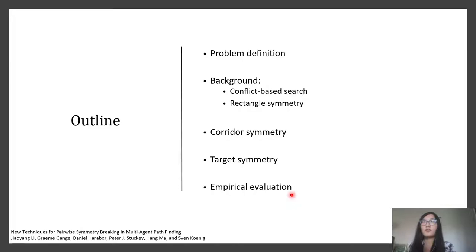In this talk, I will first define what multi-agent path finding is, and then show conflict-based search, the algorithm for solving this problem, and the existing work on symmetry reasoning. I will then show our new work, Corridor Symmetry Reasoning and Target Symmetry Reasoning, and show some experimental results.